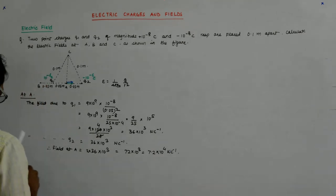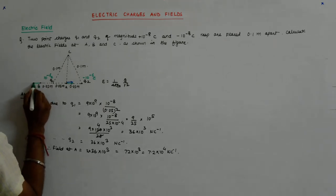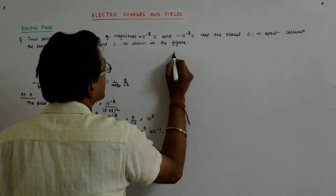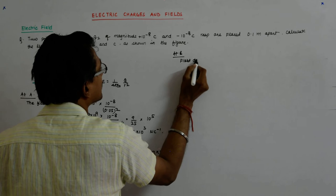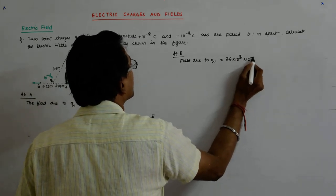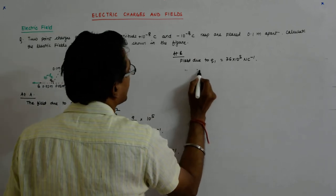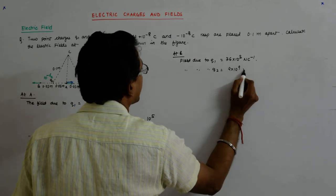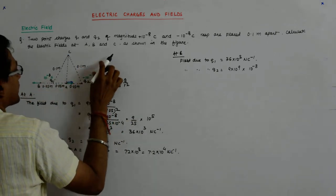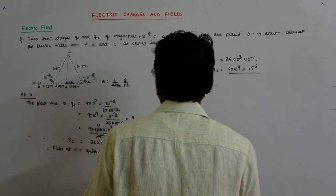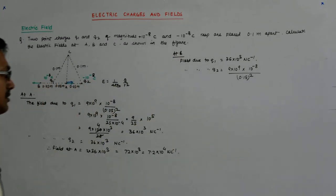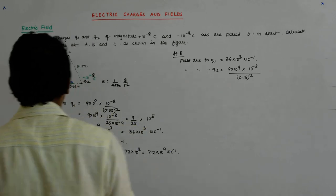At point B, the field due to Q1 radiates outwards and has the same value: 36×10³ Newton per coulomb. The field due to Q2 is 9×10⁹ × 10⁻⁸ divided by R², where R is 0.15 meters, so R² = 0.15² = (3×5×10⁻² )² = 9×25×10⁻⁴.